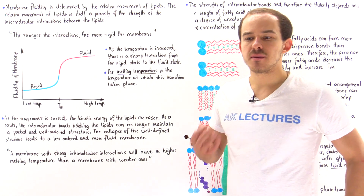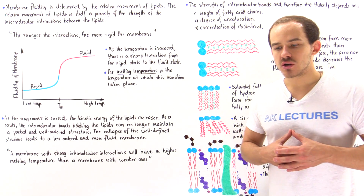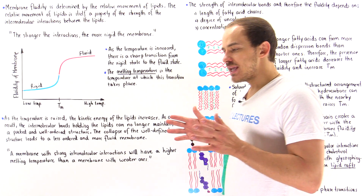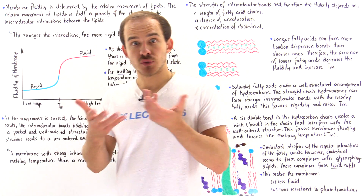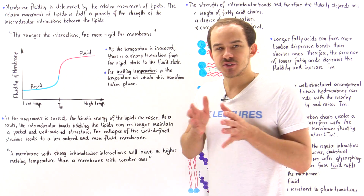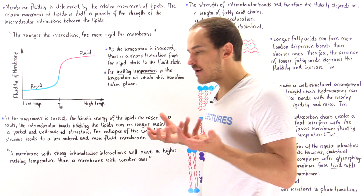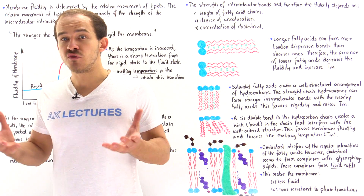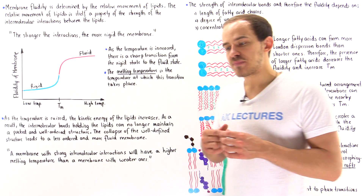The plasma membrane is a fluid-like structure, and what determines the fluidity is the relative movement of all the molecules — the phospholipids and proteins that exist within that membrane. The more movement we have, the more fluid that membrane is. The less movement we have, the more rigid that membrane is.